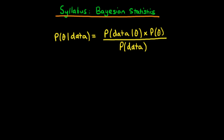In this video I want to talk about the syllabus which we're going to be covering for Bayesian statistics. The entirety of the syllabus is going to be based around the Bayesian formula which I've written down here. The goal of any sort of Bayesian inference process in general is to derive what we call the posterior distribution.